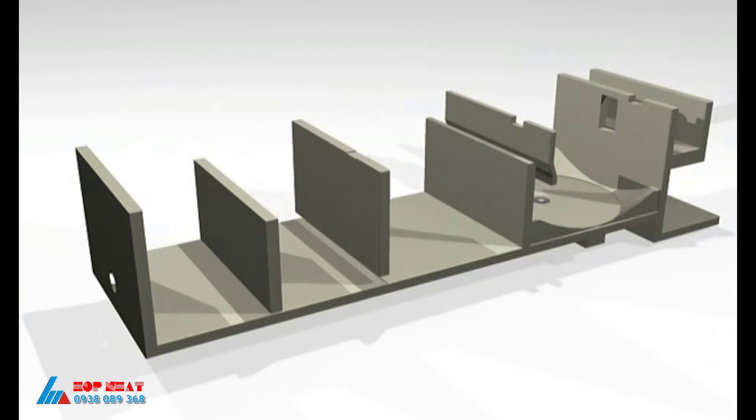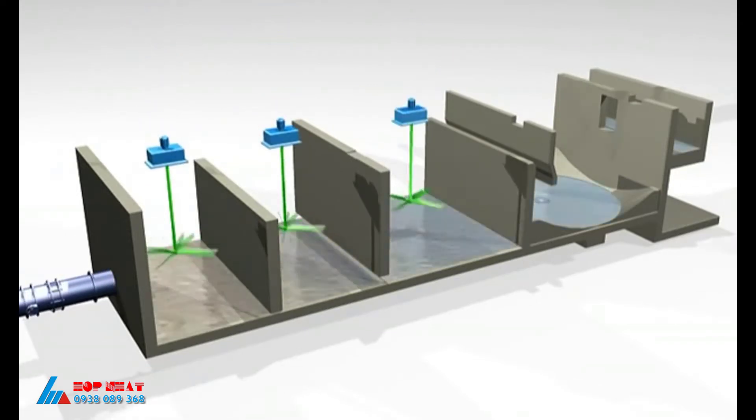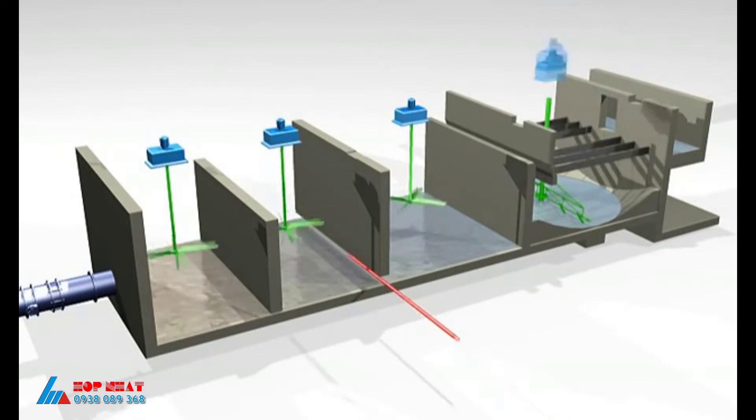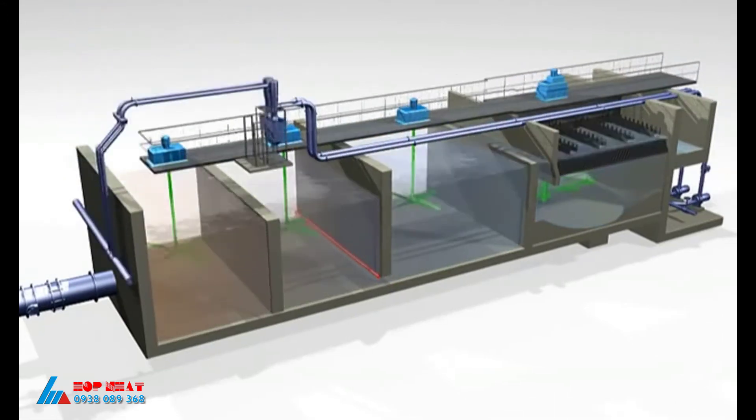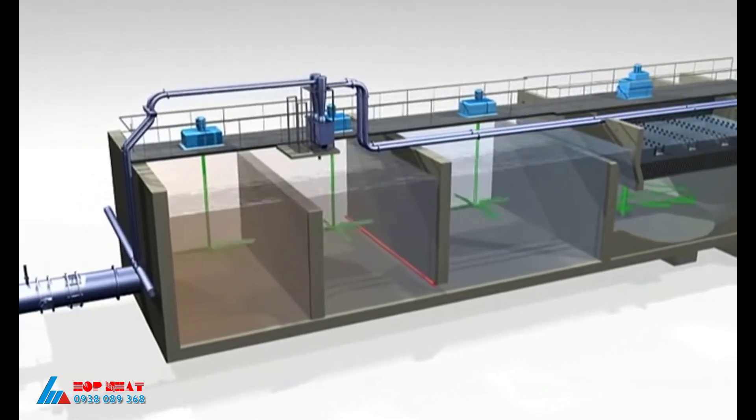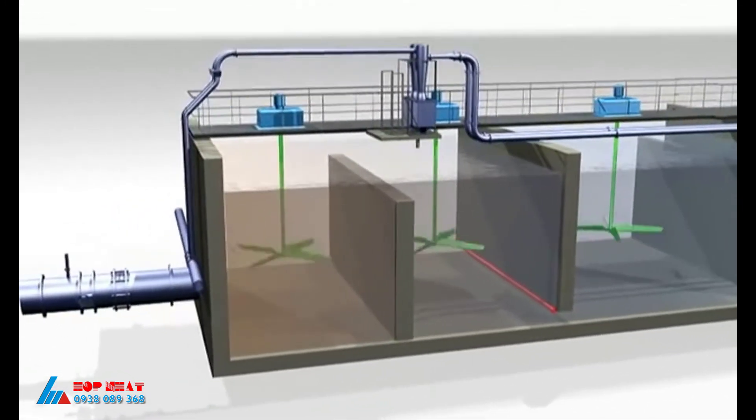ACTIFLOW consists of three flocculation basins followed by a lamella settler. Equipment in the flocculation basins includes agitators with an axial mixing pattern. The settling tank includes a sludge scraper, lamella and water collection troughs. Centrifugal rubber lined pumps are used to pump the micro sand sludge slurry to hydrocyclones for sand cleaning and recovery.